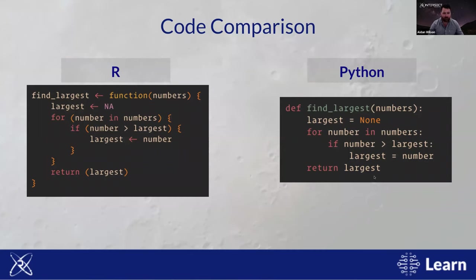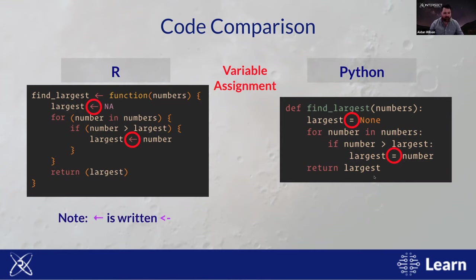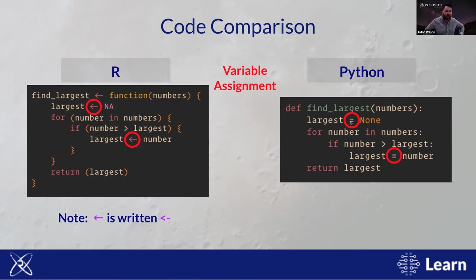For variable assignment: in R, we use the left-arrow digraph — a less-than sign and a dash that forms a left arrow — to assign variables. For example, the variable 'largest' is given the value NA, meaning not applicable in R, same as None in Python. Python, like most languages, uses the equal sign for variable assignment. The left-arrow is not acceptable in Python, though for compatibility the equal sign is also acceptable in R.